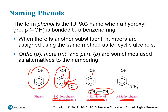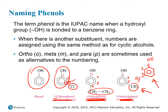An ethyl group at the 4 position gives 4-ethylphenol. A methyl group at the 3 position gives 3-methylphenol. Remember, you're not always counting clockwise — if the methyl group is on the other side of the ring, you still begin with the OH on the first carbon and count the shortest distance, still getting 3-methylphenol. In other words, that molecule is the same as this one, just rotated 180 degrees.